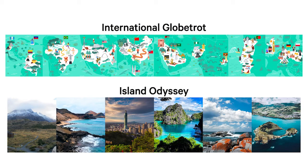Looking at our sample maps again, you can see the International Globetrot map flows seamlessly across the globe and has visual continuity. Our Island Odyssey, on the other hand, is unified with the theme of island hopping and has thematic continuity.